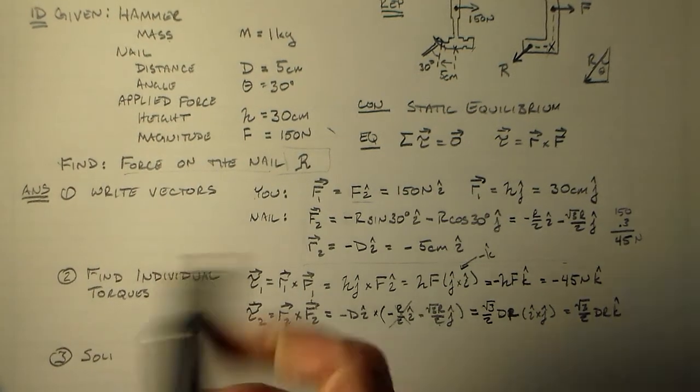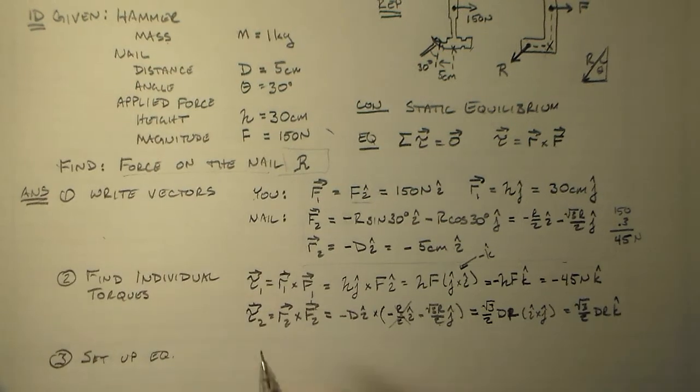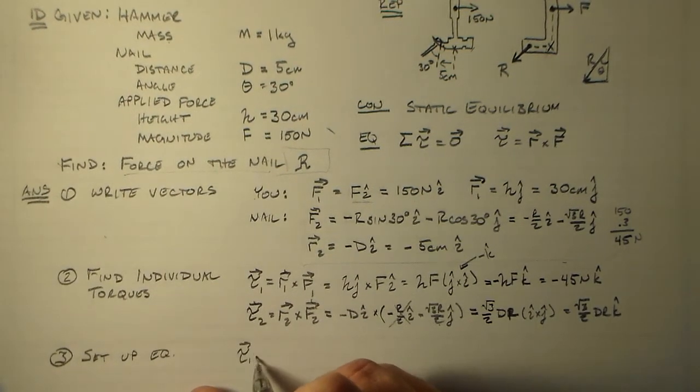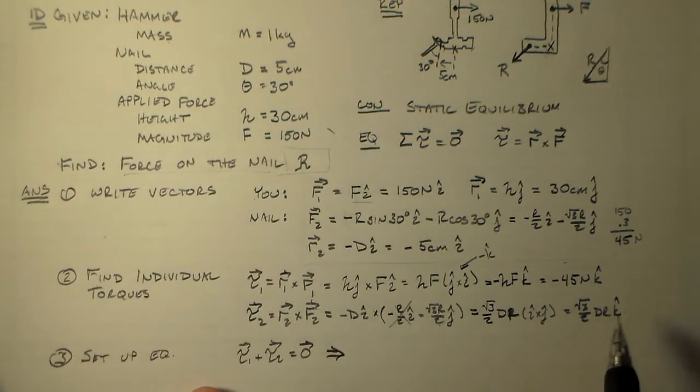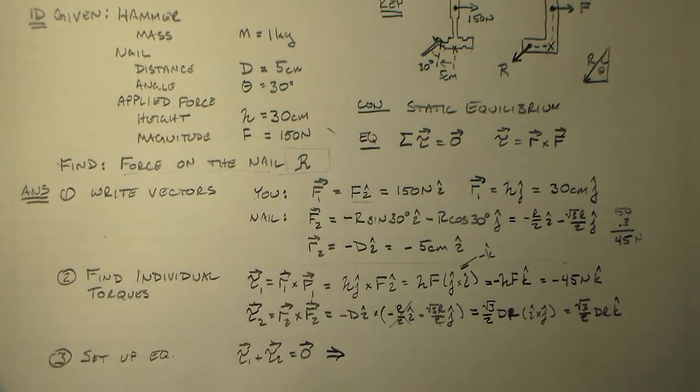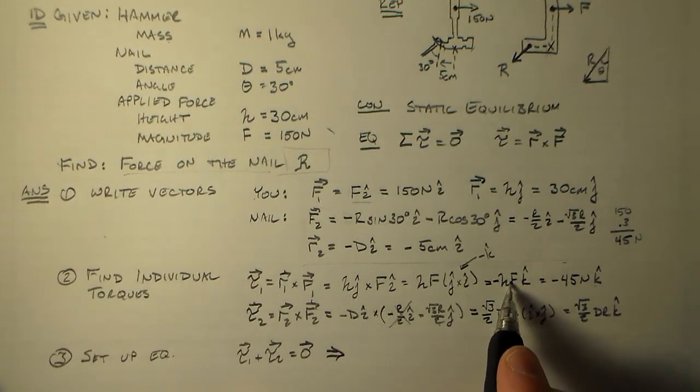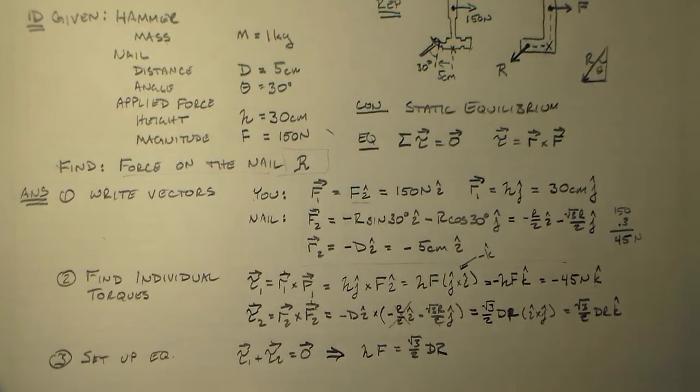So then we'll set up the equations, which is tau 1 plus tau 2 is equal to 0. I'll do this quick and dirty way. These are both in the same direction. So I only need to worry about that one equation. The equations in the i and j directions, in the x and y directions, they don't matter. These also have opposite signs. So basically the magnitude of this has to equal the magnitude of that. So we have h f equals the square root of 3 over 2 dr.